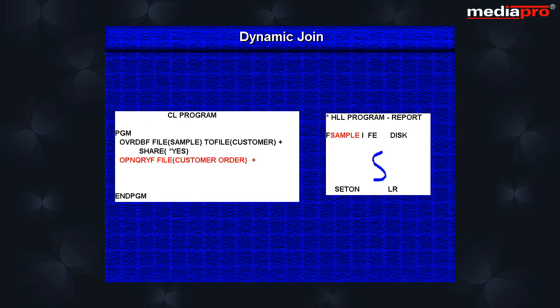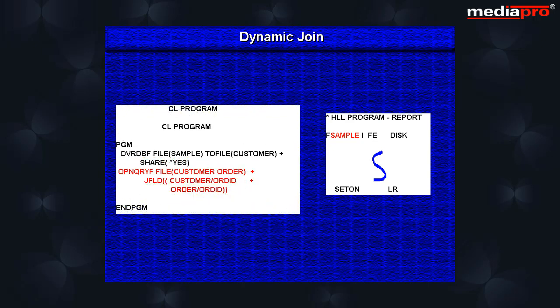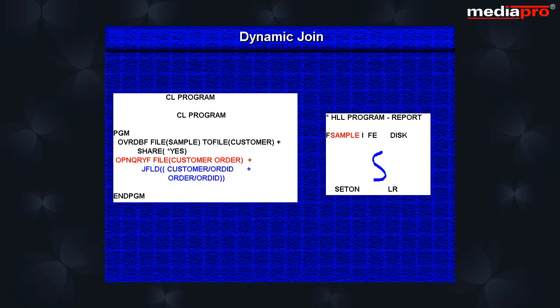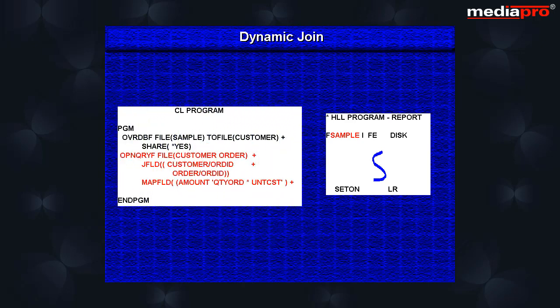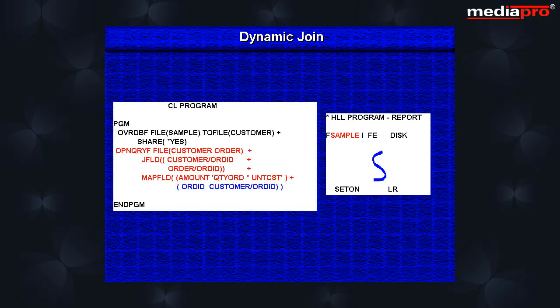Then we come to the open query file command. In the file parameter we identify all the files to be joined. The first file in the list is the primary file. The join field parameter identifies the fields on which the two files are to be joined. In case there are more than two files to be joined, there will be a set of field entries for each pair of joins specified. On the map field parameter we define the derived field total cost. We also need to distinguish the order ID field since it appears in both files; here we specify that the order ID field is to be taken from the customer file.